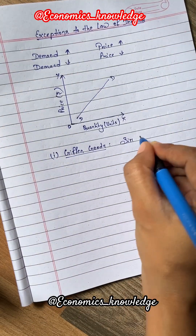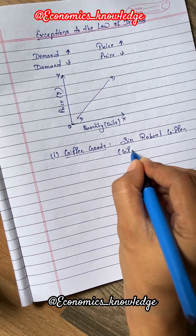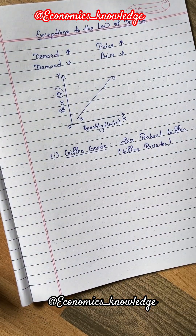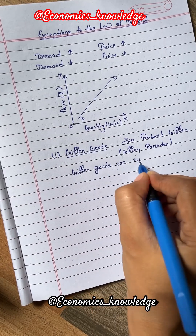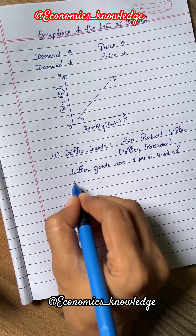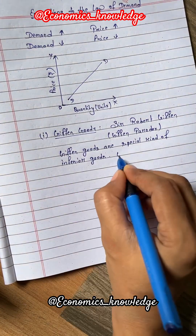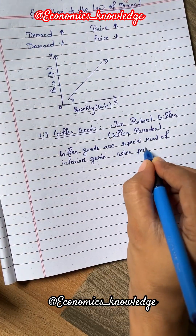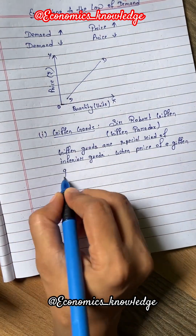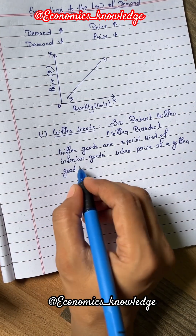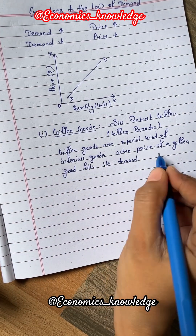The main causes of the demand curve sloping upward are: Number 1, Giffen Goods. This fact was first analyzed by Sir Robert Giffen, so it is called the Giffen Paradox. Giffen Goods are a special kind of inferior goods. When the price of a Giffen Good falls, its demand also falls, and vice versa.